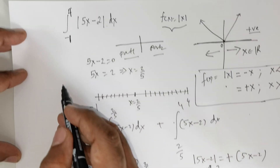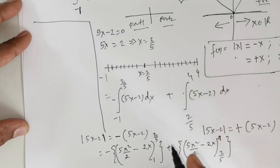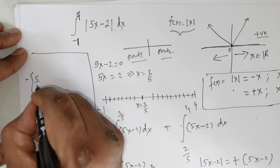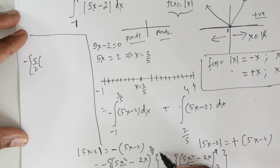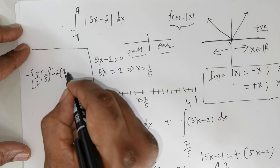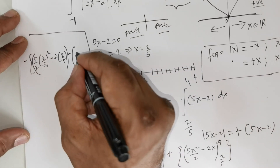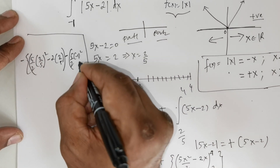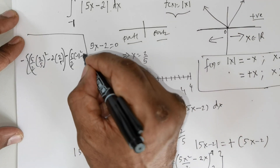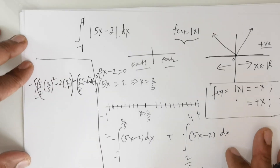We apply upper limit minus lower limit. Substituting the upper limit x = 2/5 gives 5/2 times (2/5)² minus 2 times (2/5). Substituting the lower limit x = -1 gives 5/2 times (-1)² minus 2 times (-1). There is also an overall negative sign in front from the first integral's piecewise definition.